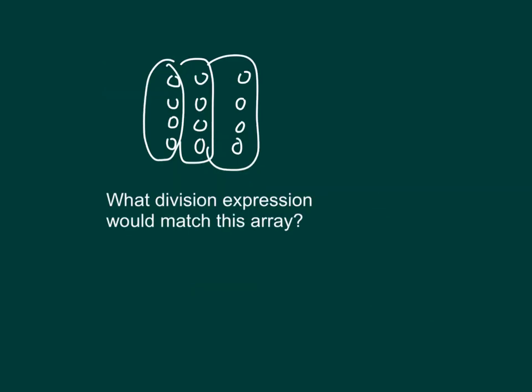Let's see this question here. What division expression would match this array? Well, let's see what we're doing here. We're taking 1, 2, 3, 4, 5, 6, 7, 8, 9, 10, 11, 12. We're taking 12 for sure. And we're dividing it into how many groups? Well, 1, 2, and 3. So we're dividing it by 3. So that there are how many within each group? There's 4 within each group.